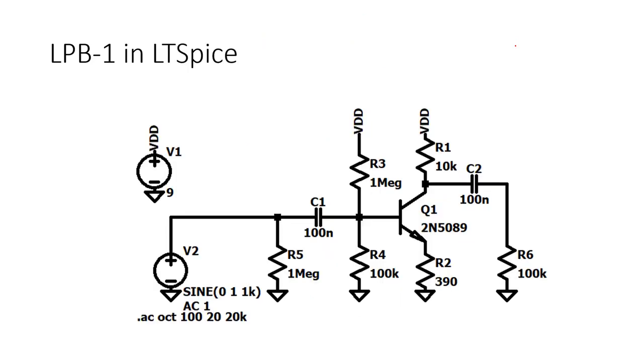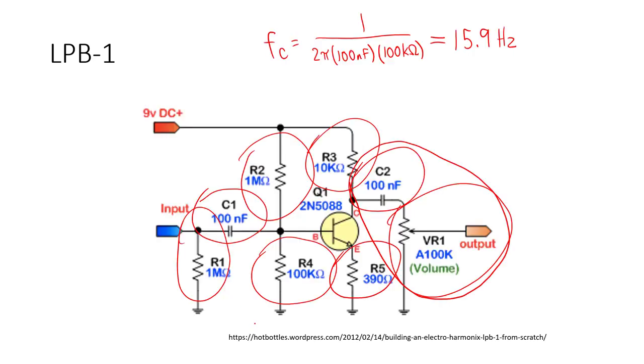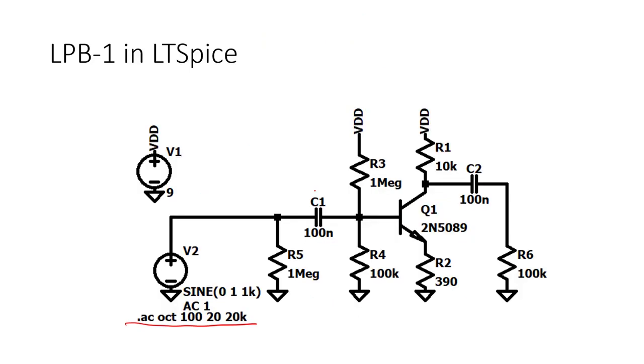Here we see a schematic of the circuit recreated in LTSpice. In this simulation, I'm performing an AC frequency sweep from 20 hertz to 20 kilohertz. I'm also using a slightly different transistor. In the original schematic, it's supposed to be a 2N5088. That doesn't exist in LTSpice, so I'm using a 2N5089 instead. The behavior should match pretty closely, though.